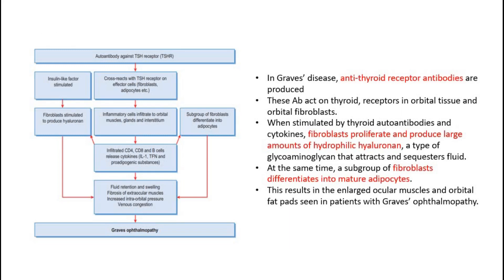For pathophysiology, in Graves' disease, antithyroid receptor antibodies are produced. These antibodies act on thyroid receptors in orbital tissue and orbital fibroblasts. When stimulated by thyroid autoantibodies and cytokines, fibroblasts proliferate and produce large amounts of hydrophilic hyaluronan, a type of glycosaminoglycan that attracts and sequesters fluid.